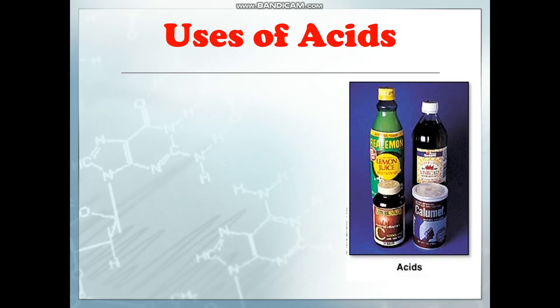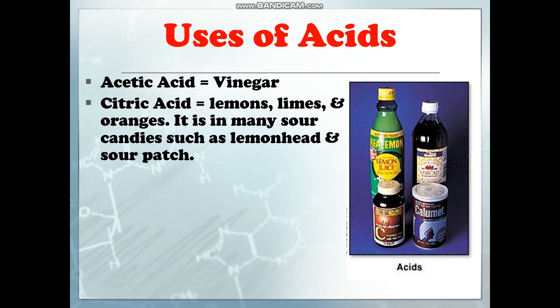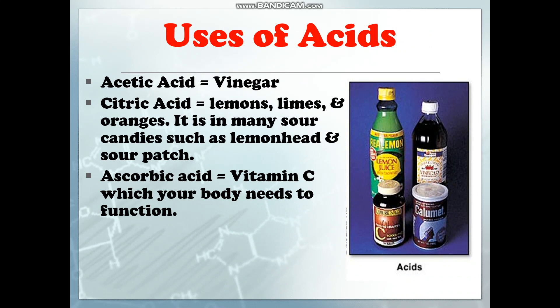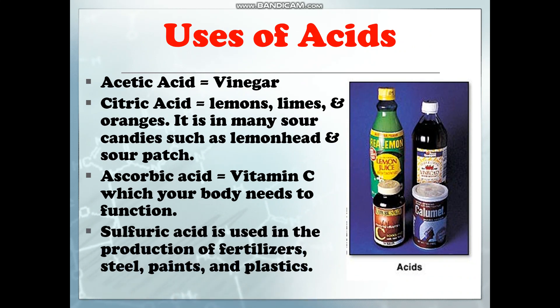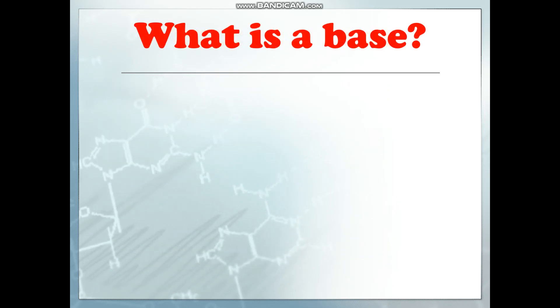What are the uses of acids? Acetic acid is found in vinegar, which is a condiment we use in cooking. Citric acid is found in lemons, limes, and oranges, and is present in many sour candies such as Lemonheads.